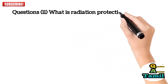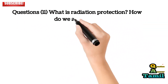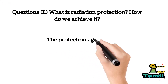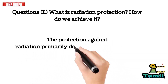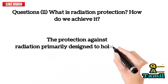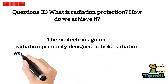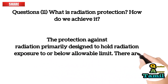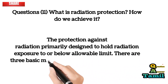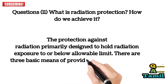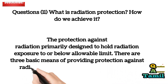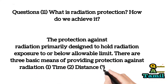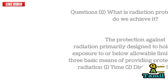Question 11: What is radiation protection and how do we achieve it? Radiation protection is primarily designed to hold radiation exposure below the allowable limit. There are three basic means of providing protection against radiation: 1. Time, 2. Distance, and 3. Shielding.